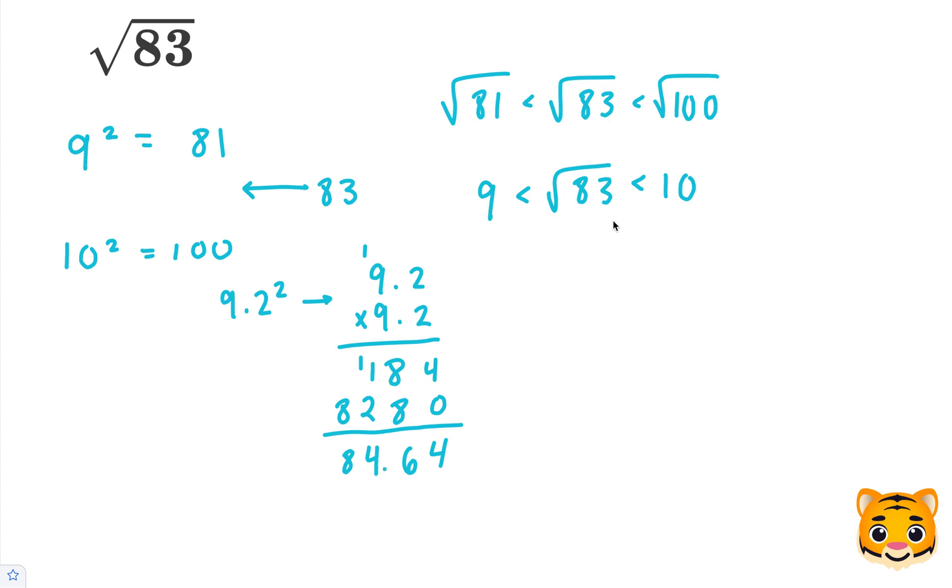which is close to 83, but it's a little bit over. Let's try 9.1 times 9.1. 1 times 1 is 1. 9 times 1 is 9. Add our 0. 9 times 1 is 9. 9 times 9 is 81. When we add these together, we end up getting 82.81. So we can see 82.81 is closer to 83 than 84.64.